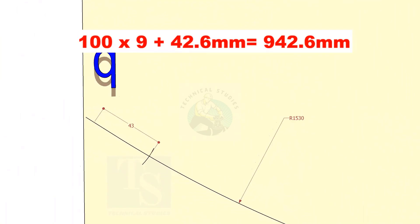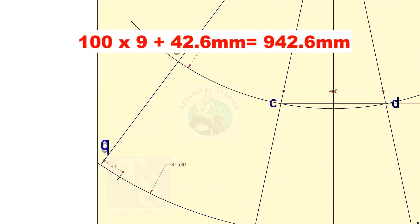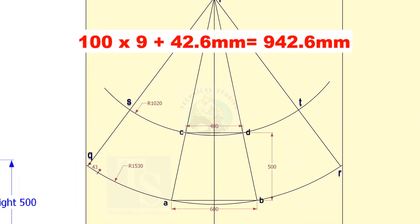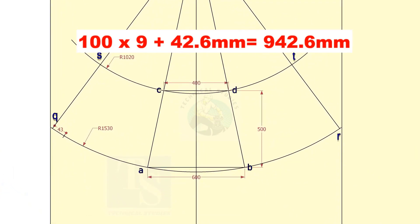Add the 42.6mm at the end of 900mm on both sides of the center line. Draw lines connecting this point to P. Thank you for watching.